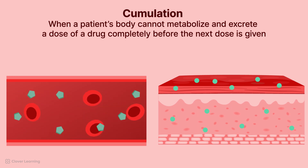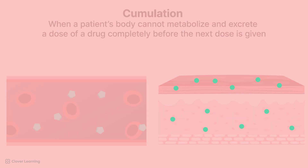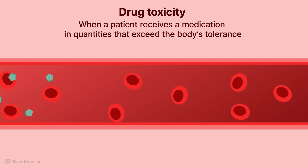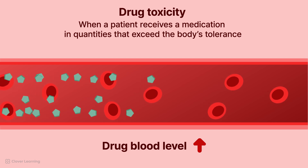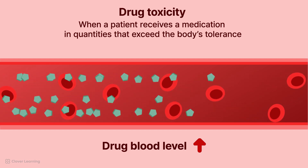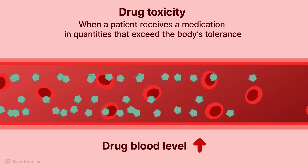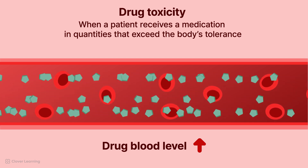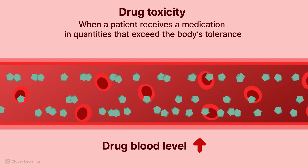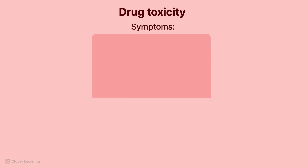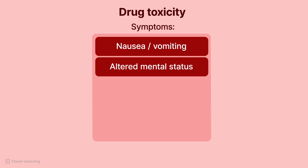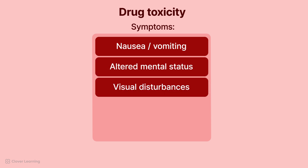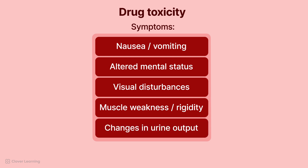High concentrations of many drugs can create toxicity. Drug toxicity occurs when a patient receives too large an amount of medication, resulting in the drug blood level being too high, or in quantities that exceed the body's tolerance. These can be at therapeutic and non-therapeutic doses. Symptoms can vary widely depending on the specific drug and body system involved, but can include nausea and vomiting, altered mental status, visual disturbances, muscle weakness or rigidity, and changes in urine output.